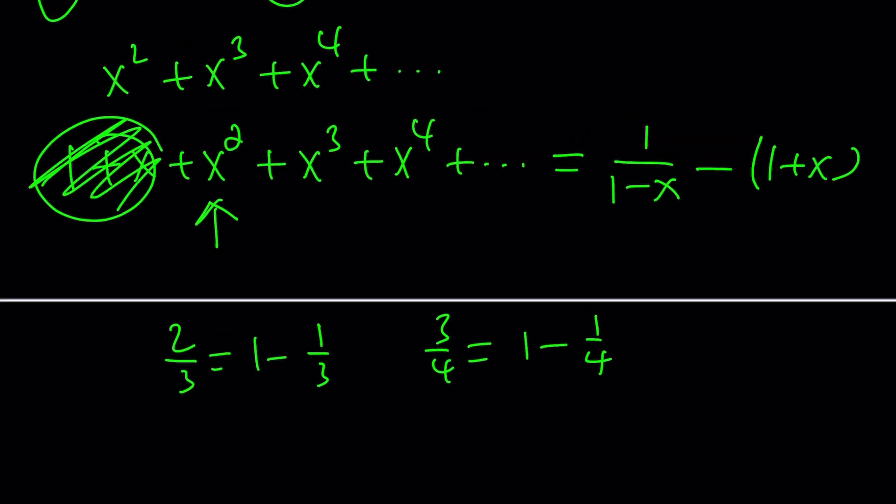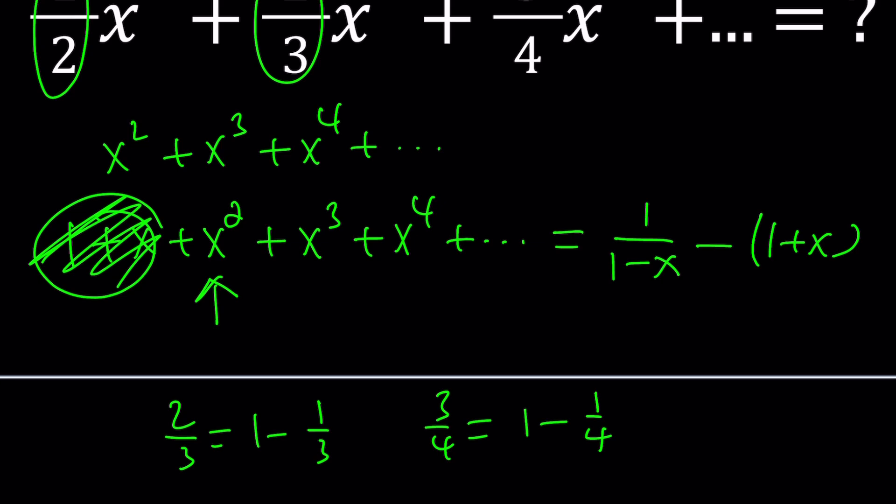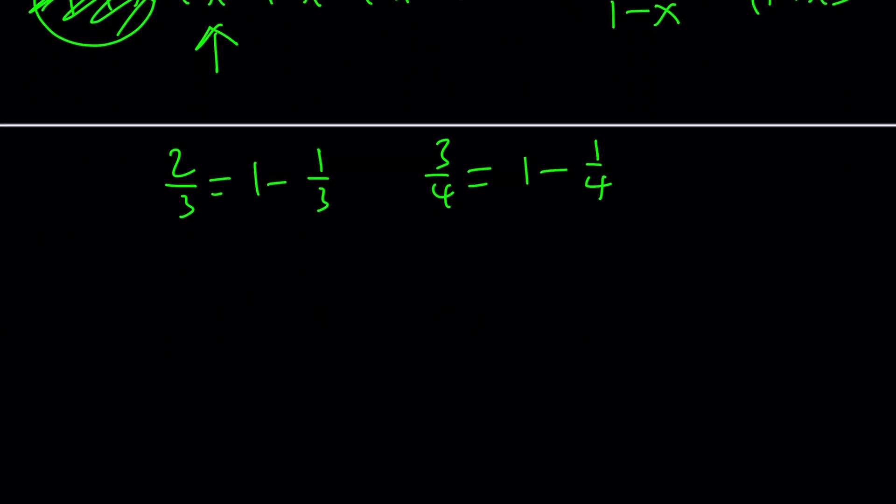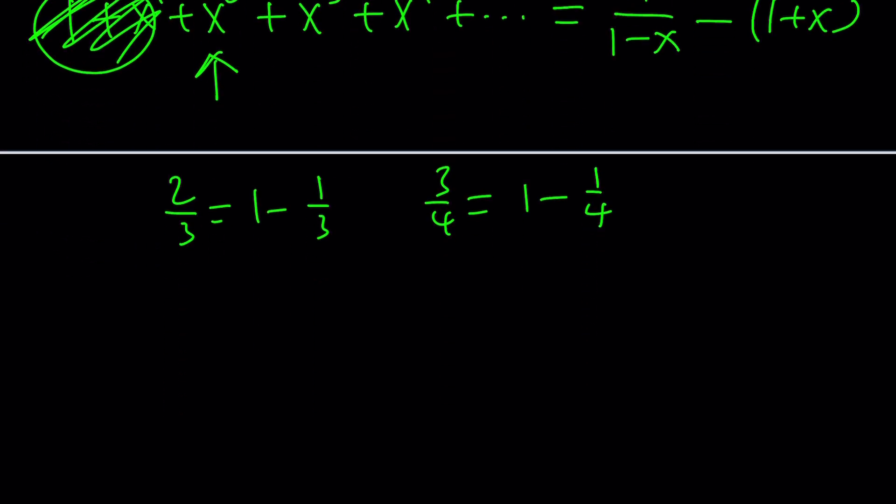So there's a nice way to approach it, maybe, right? What does that mean? It means that you can kind of write this as 1 minus 1 half x squared, and then 1 minus 1 third x cubed, and then 1 minus 1 fourth, x to the fourth, and so on and so forth, right?